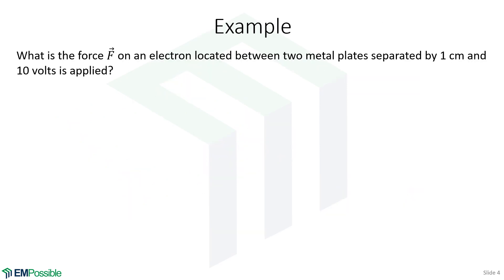Let's do a quick example just to start and get a feel for the numbers. Let's say we have two metal plates — a parallel plate capacitor, for example, separated by one centimeter, and we apply 10 volts between those plates. What is the force on an electron located between those two metal plates? My solution is always going to start the same — I'm going to sketch the problem.